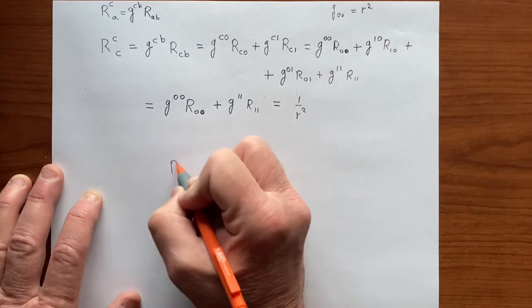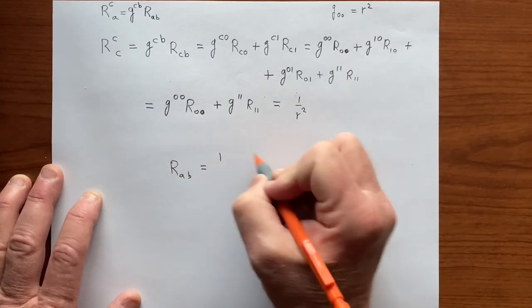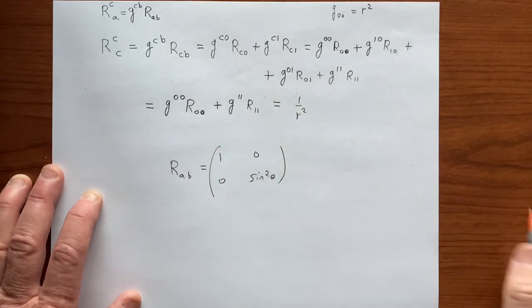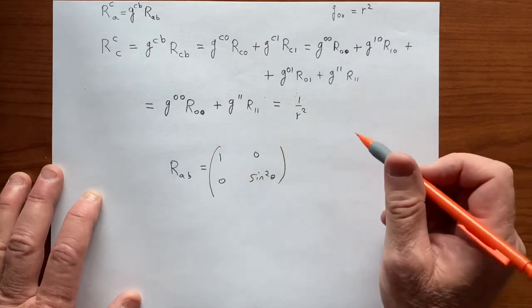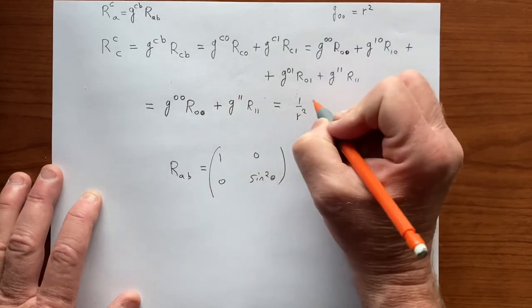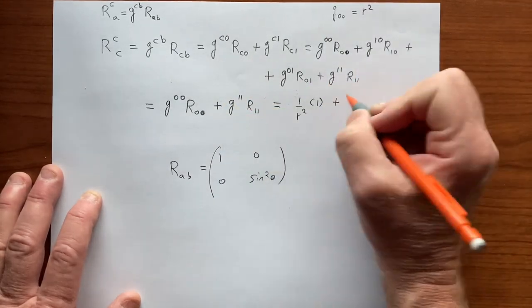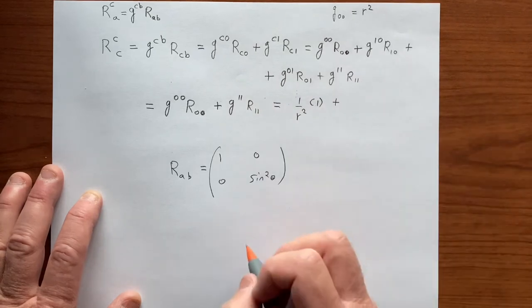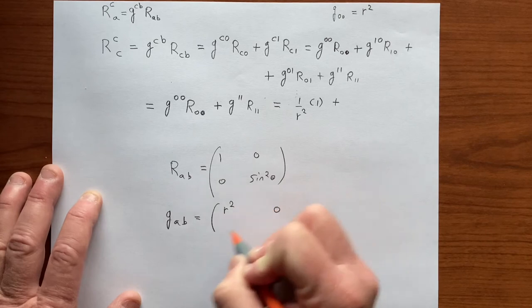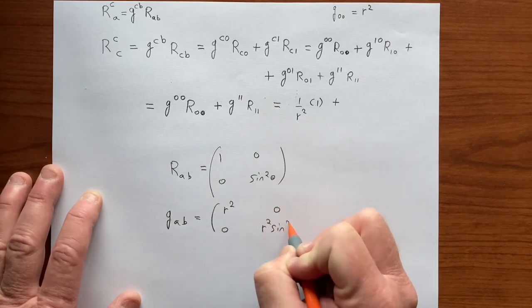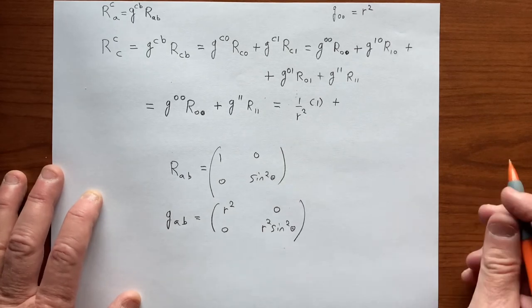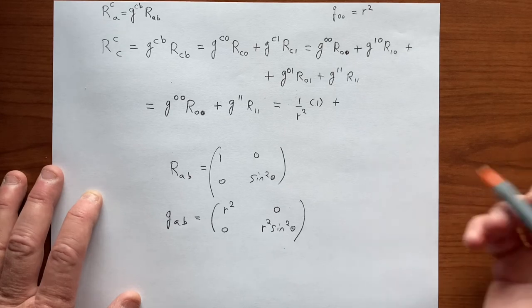We remember that R_AB is equal to (1, 0; 0, sin² θ), so we're multiplying this by this, which is that, so there's nothing to do there, plus G^11. But let's remember that G_AB is equal to (R², 0; 0, R² sin² θ).